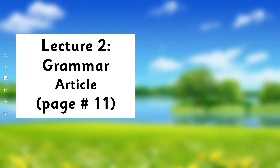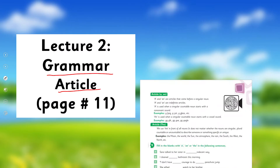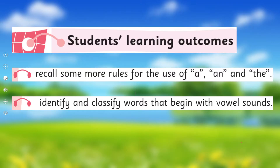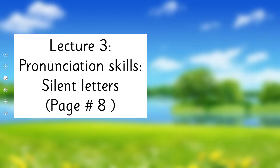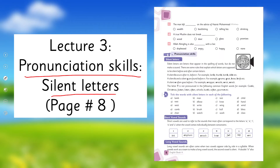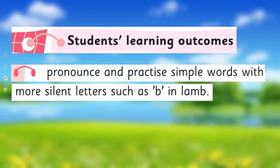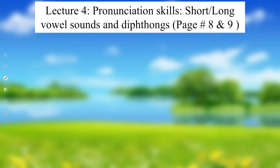Lecture 2 is about grammar — articles — covering page number 11 of the book. The SLOs will cover recalling some more rules for the use of 'a', 'an', and 'the', and to identify and classify words that begin with vowel sounds. Lecture 3 is about pronunciation skills — silent letters — covering page number 8 of the book, and the SLO will cover pronouncing and practicing simple words with silent letters, such as the 'b' in 'lamb'.